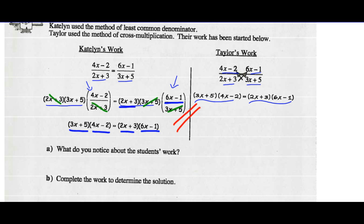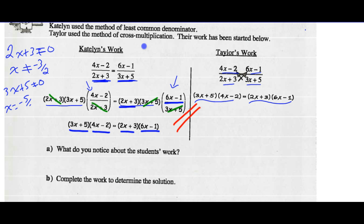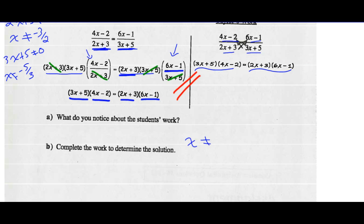One thing Caitlin and Taylor both didn't do was state non-permissible values. The non-permissible values come from the denominators: 2x plus 3 cannot equal 0, so x cannot equal negative 3 halves. And 3x plus 5 cannot equal 0, so x cannot equal negative 5 thirds. So x cannot equal negative 3 halves or negative 5 thirds. They both should have had those for non-permissible values.